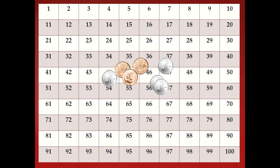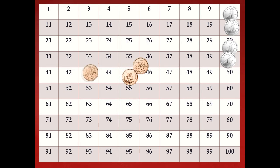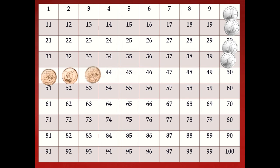Here's some more money. We're going to count it together. Our dimes are ten cents and our pennies are one. Let's start with our dimes: ten, twenty, thirty, forty, forty-one, forty-two, and forty-three. This is forty-three cents. Well done!